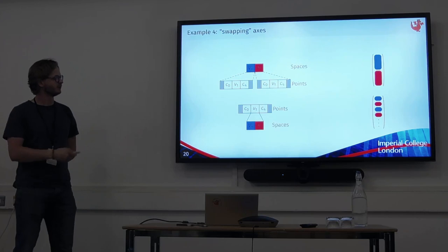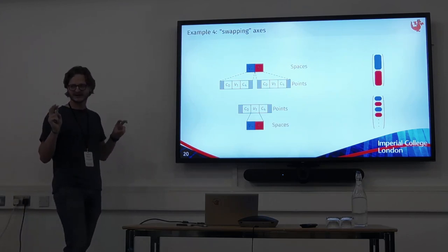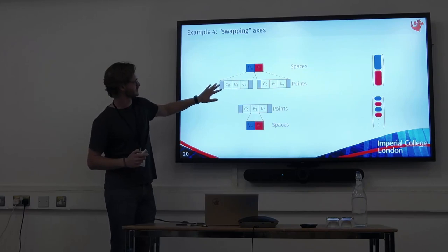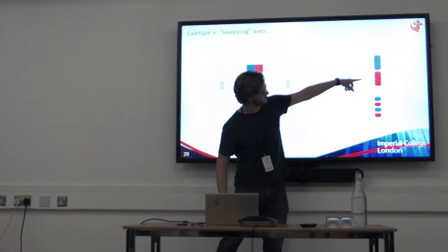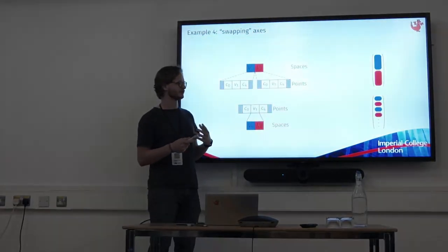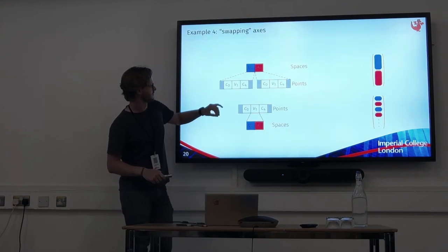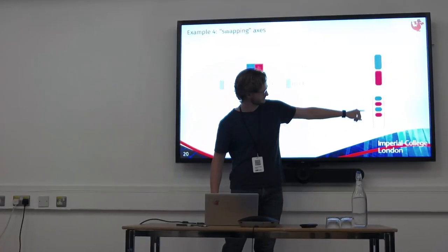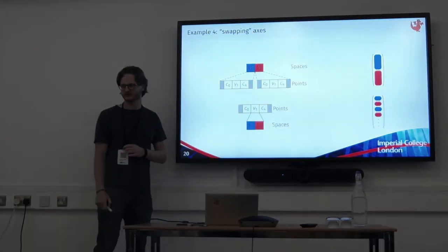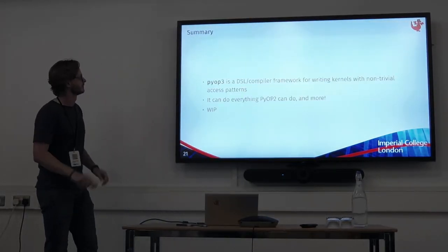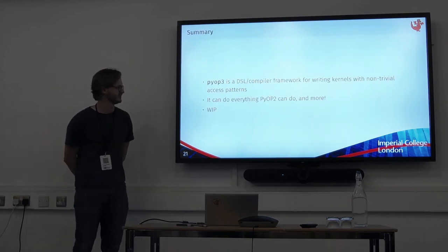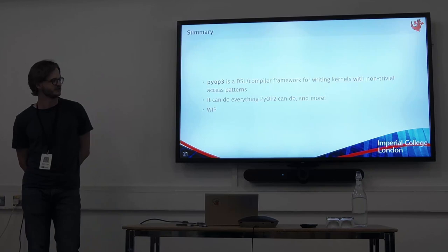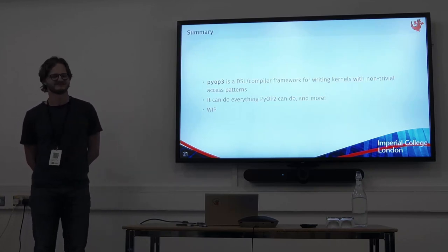The last example of a nice data layout is what I call swapping axes. Imagine a mixed space V0 and V1, storing degrees of freedom separately — by default Firedrake will do this. Sometimes you might want to look at the blue and the red together in your kernel, putting the spaces inside the mesh points, giving you a vector that looks like this. You can do this transparently in PyOP3. In summary, PyOP3 is a domain-specific language and compiler framework for writing kernels with non-trivial data access patterns. It can do everything PyOP2 can do, and more, and it's still a work in progress.